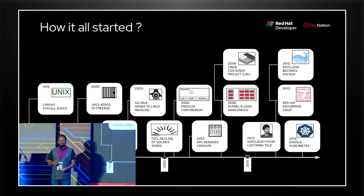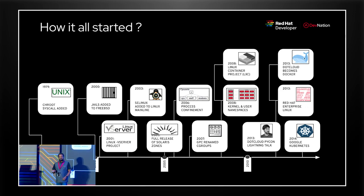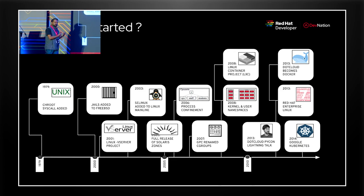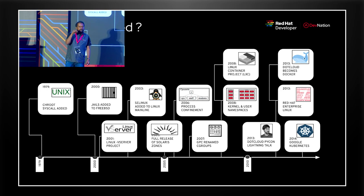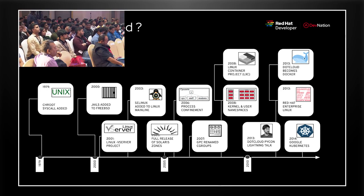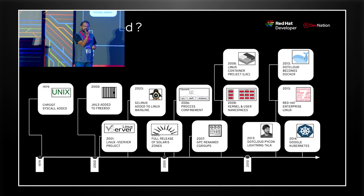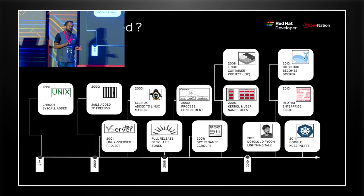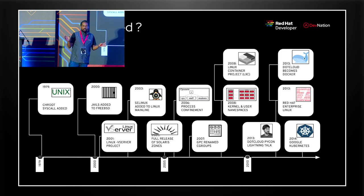Whether booking your railway tickets, authenticating yourself against a government service - most of you might have used container technologies and Kubernetes without knowing it. But where do these technologies come from? It all started in 1979 with a project called CHroot, which came in Unix. And whatever you're seeing today has origins from 1979 - this important software interface where applications could make a copy of itself into the root and have its own shared privileges.